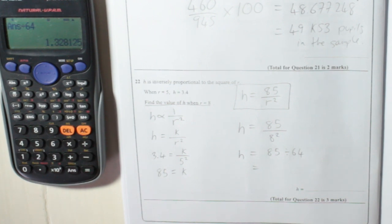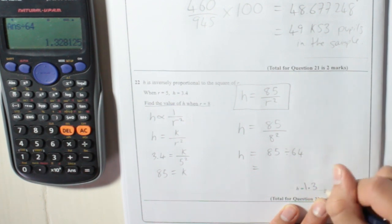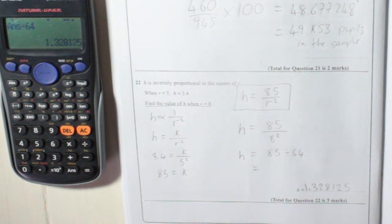And it says find the value. It doesn't ask us to round it. So I am just going to write it all in. 0.328125. Or I could have just put 85 over 64.